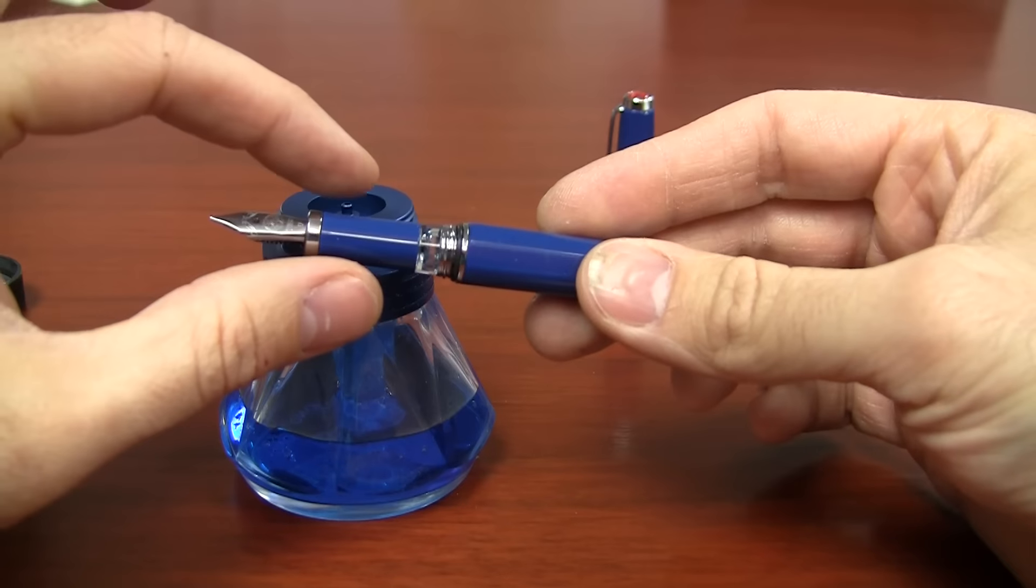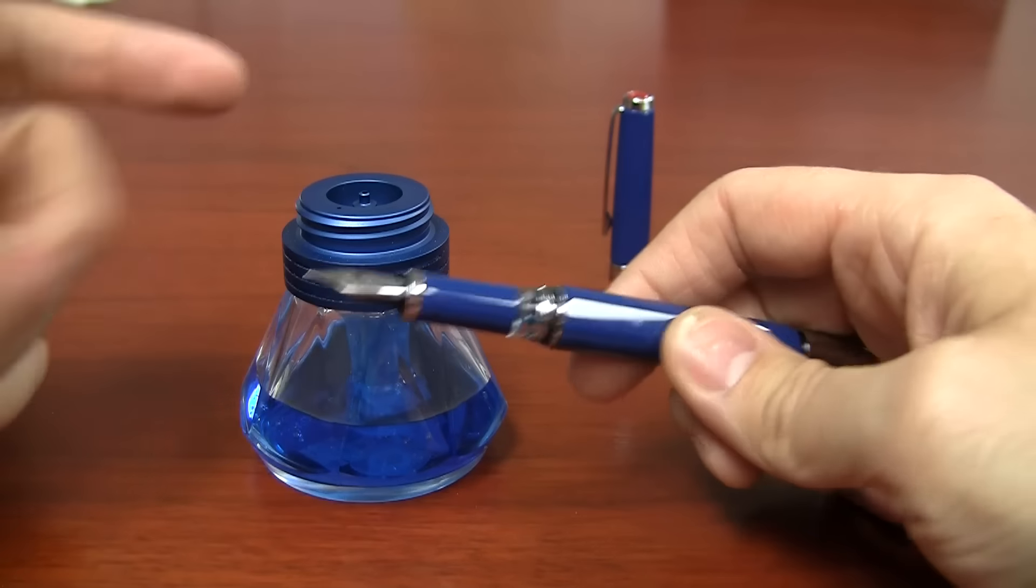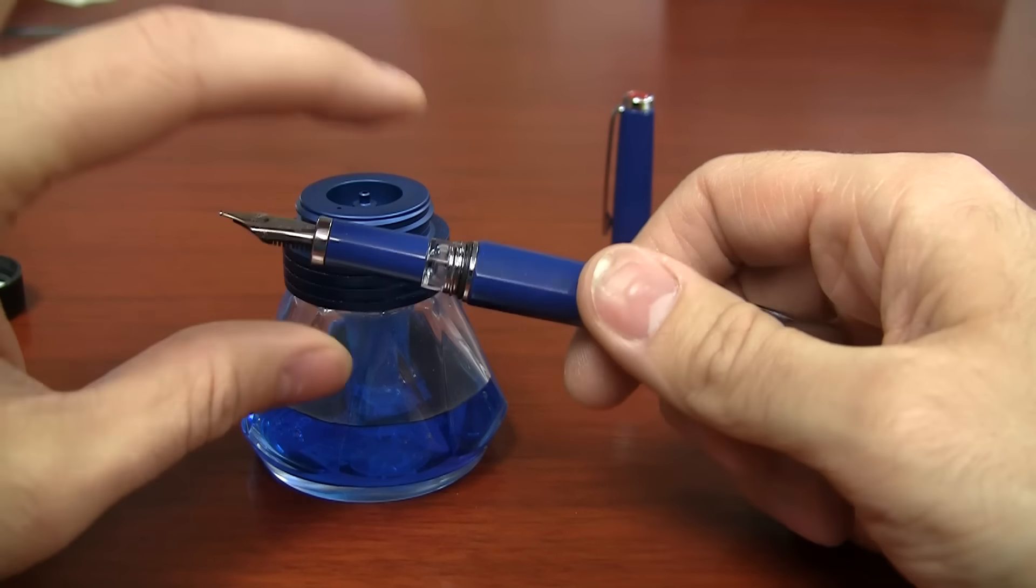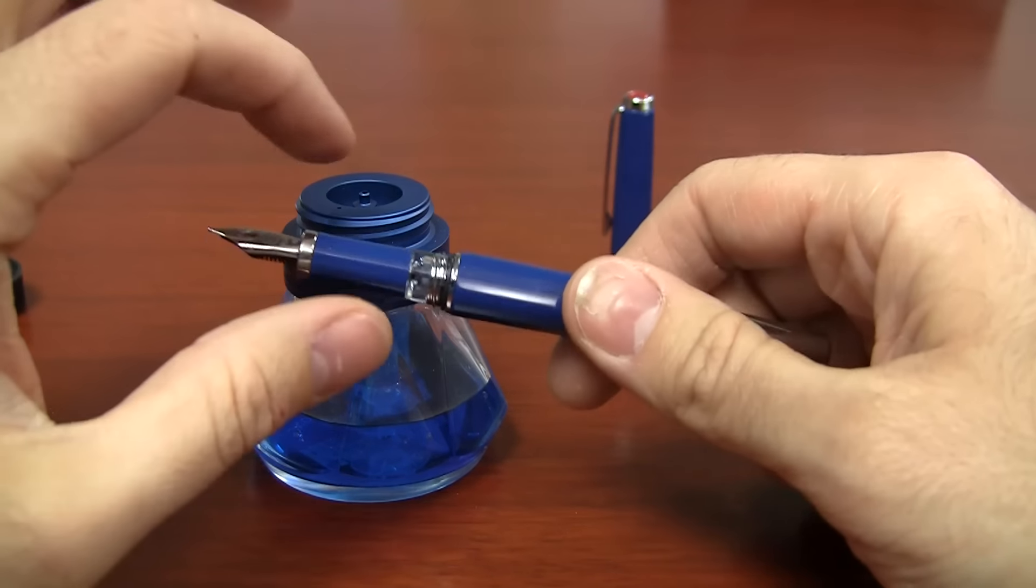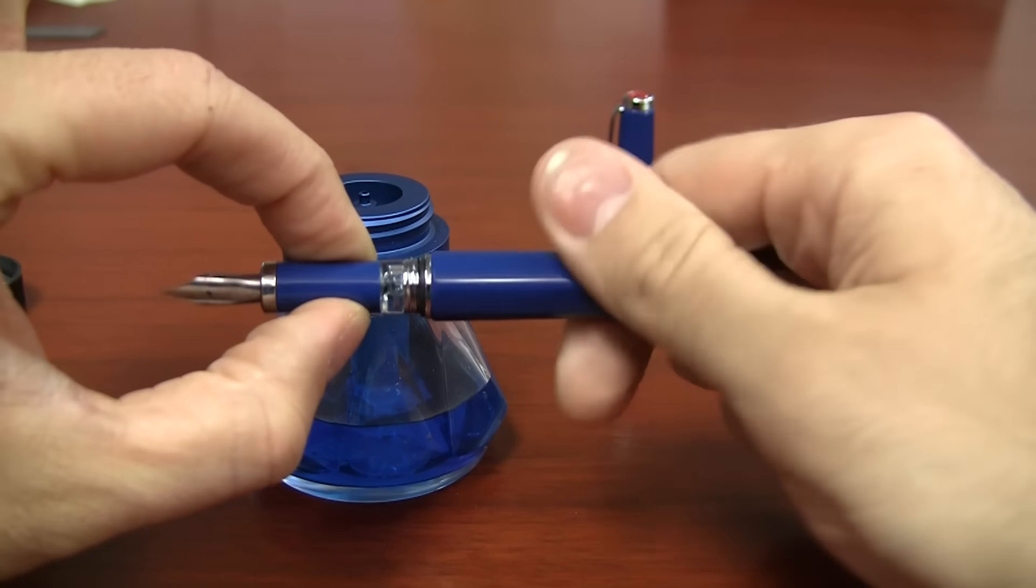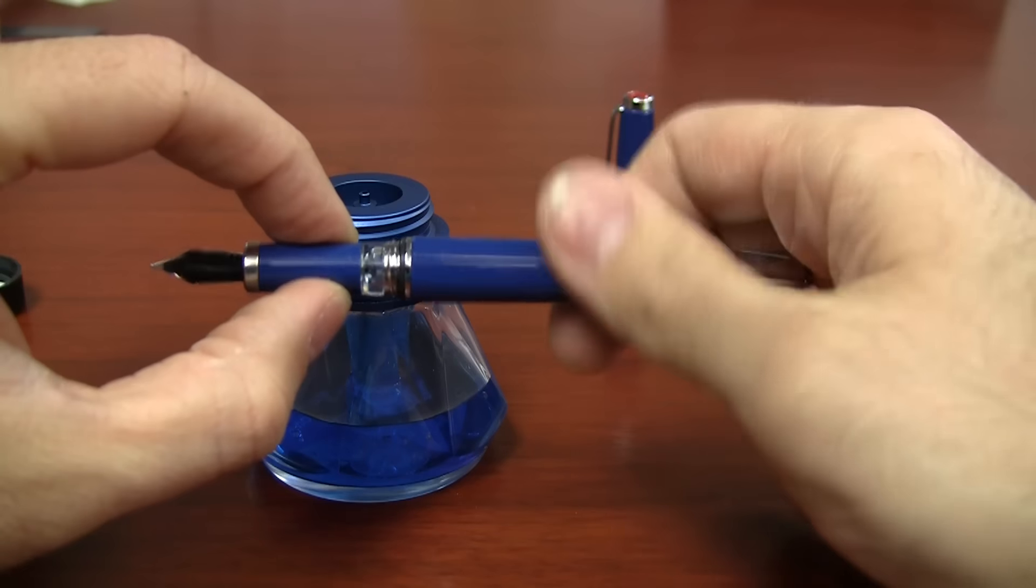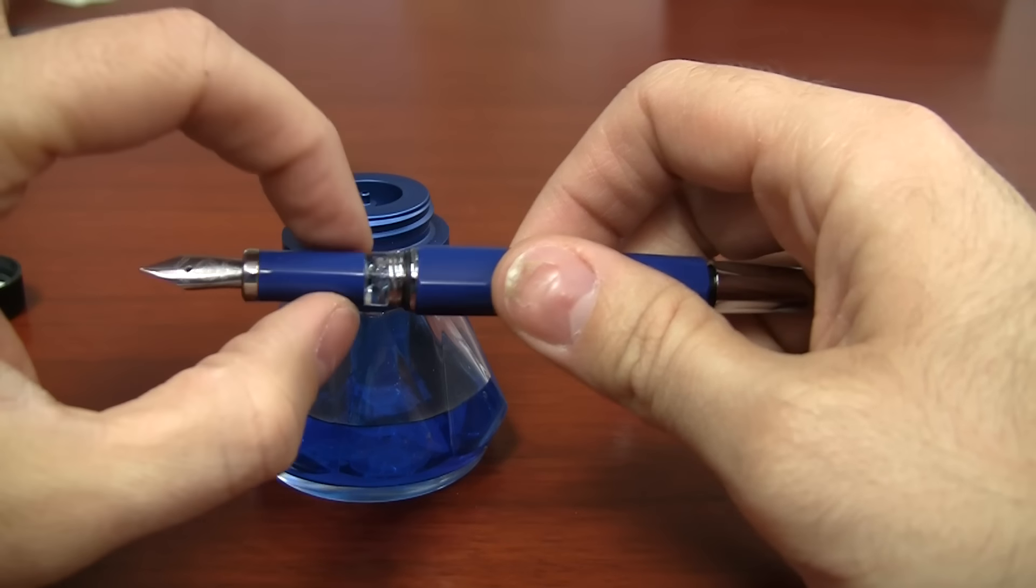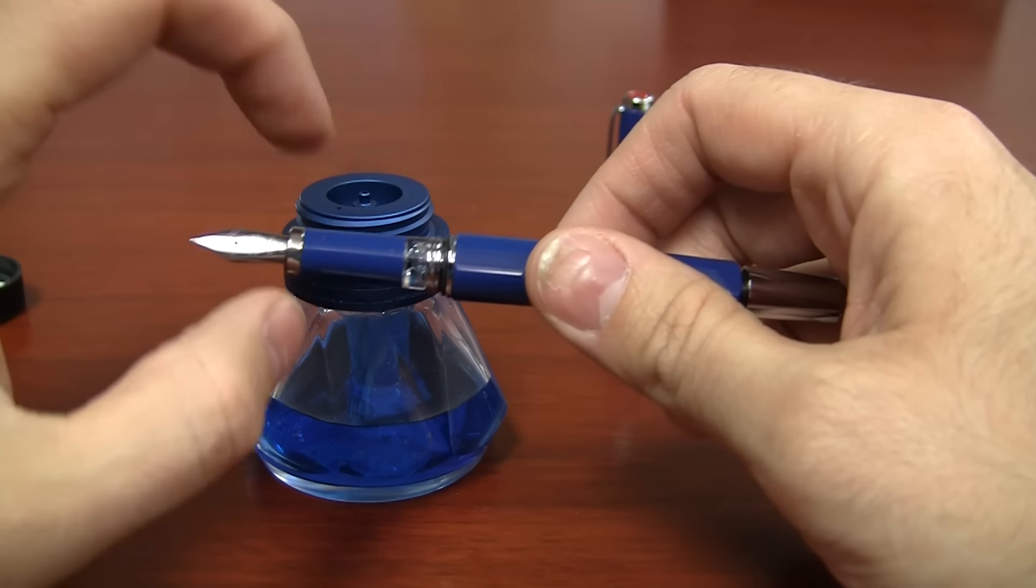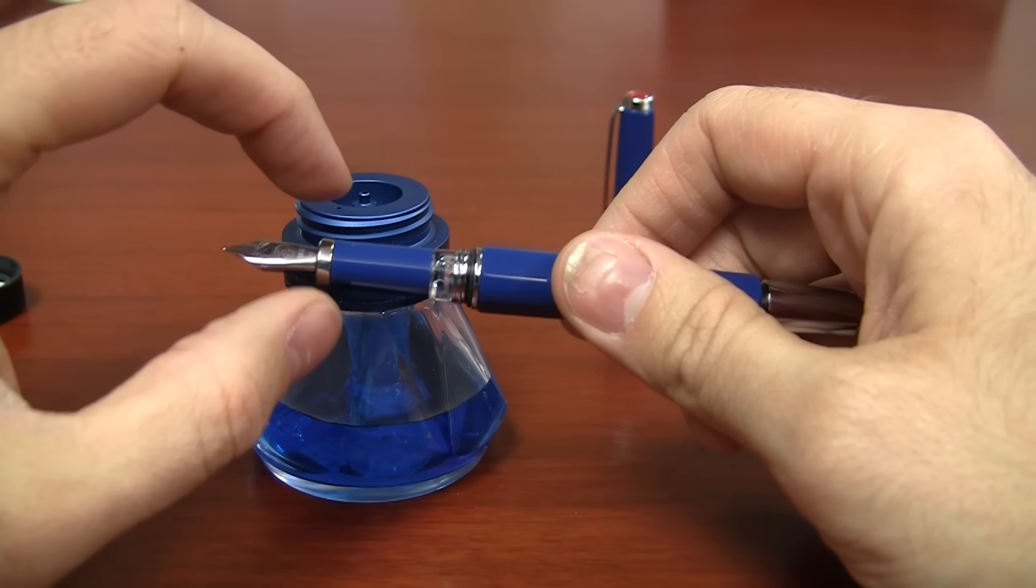So the way that you fill this thing from this bottle is you take and you grab onto the grip section and unscrew the nib completely off, grip and all. Now, if you're just grabbing here at the middle of the grip section and you turn, you're going to be turning for quite a while because there's nothing that's holding this grip section to the nib that's actually unscrewing out of the body.